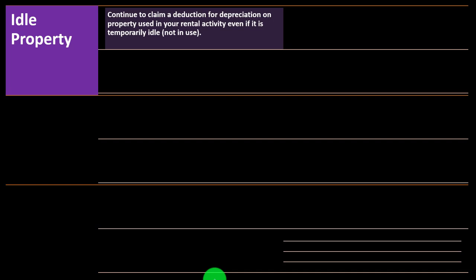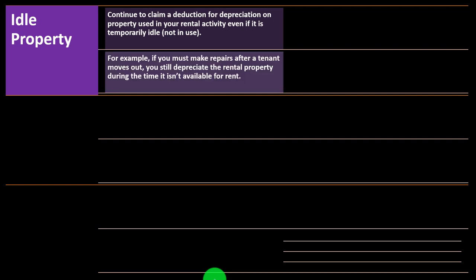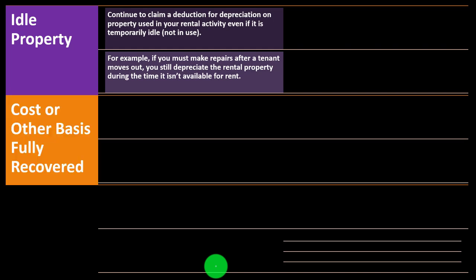Idle property: continue to claim a deduction for depreciation on property used in your rental activity even if it is temporarily idle — meaning nobody's in it, it's not in use. For example, if you make repairs after a tenant moves out, you still depreciate the rental property during the time it isn't available for rent. Once we're depreciating it and a tenant moves out, we don't stop and say we're not depreciating for that time period — it's part of the business activity at that point.